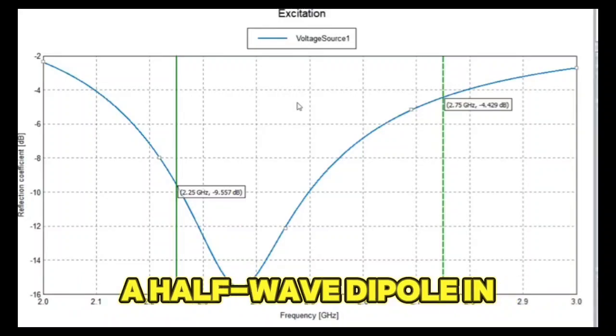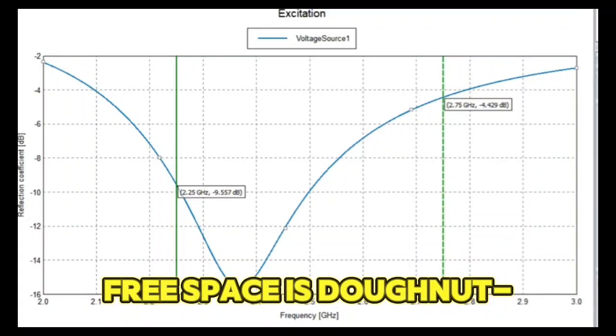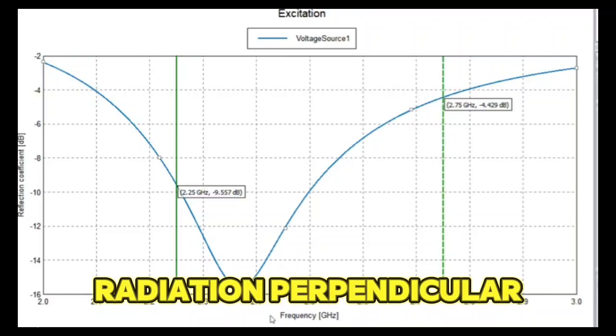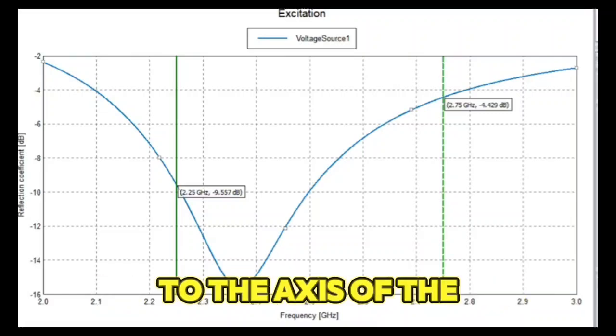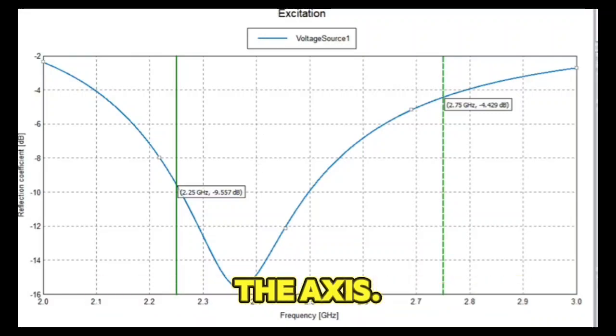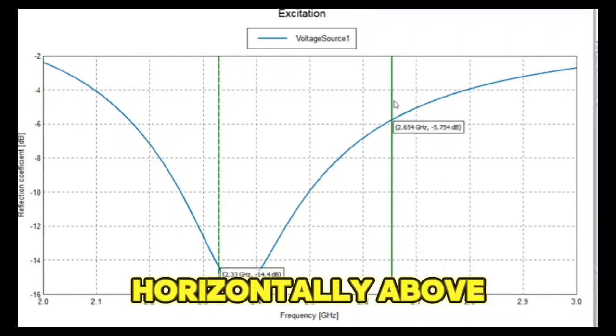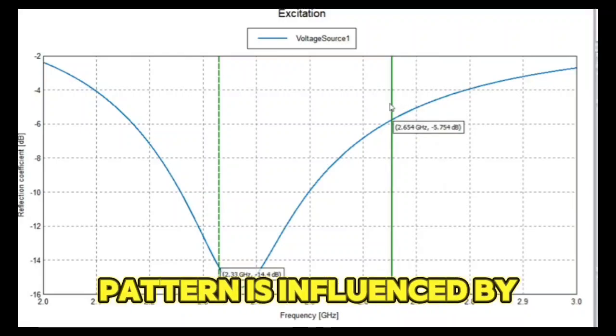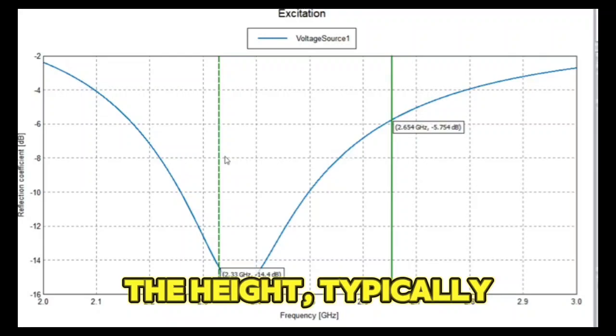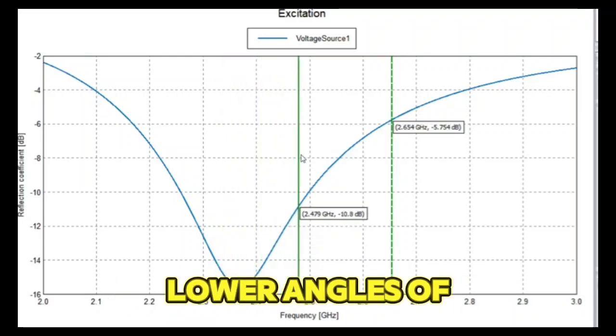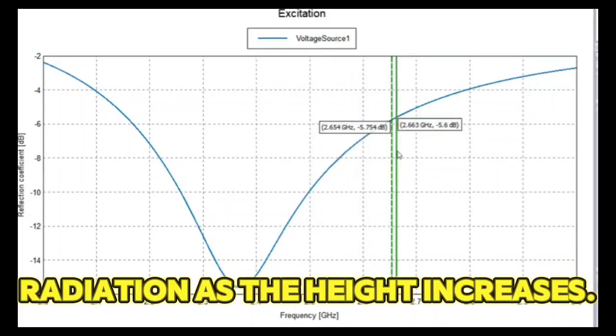The radiation pattern of a half-wave dipole in free space is donut-shaped, with the maximum radiation perpendicular to the axis of the antenna and nulls along the axis. When mounted horizontally above ground, the radiation pattern is influenced by the height, typically showing more gain and lower angles of radiation as the height increases.